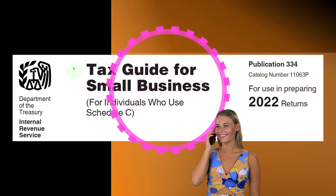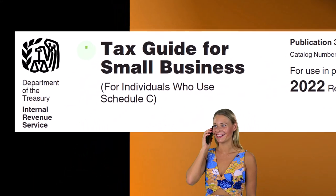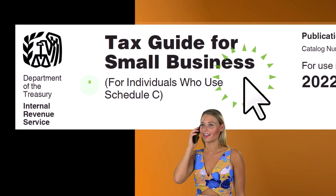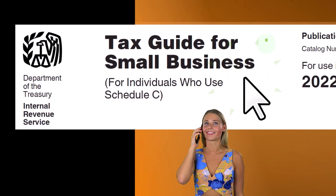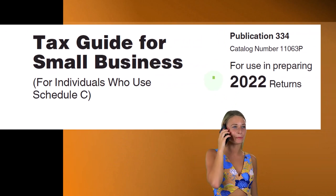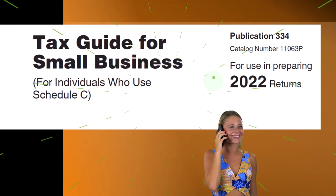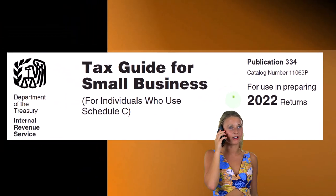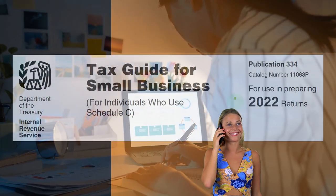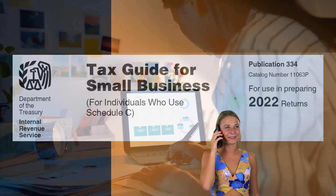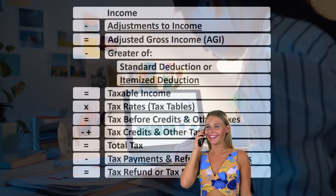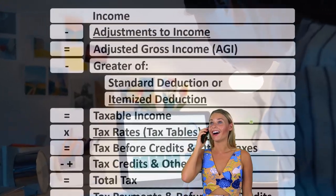Most of this information comes from the Tax Guide for Small Business for individuals who use Schedule C, Publication 334, tax year 2022, which you can find on the IRS website, irs.gov.